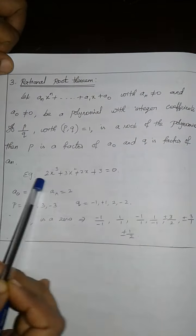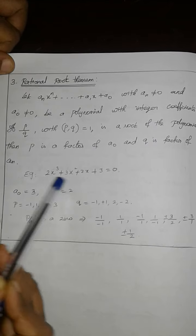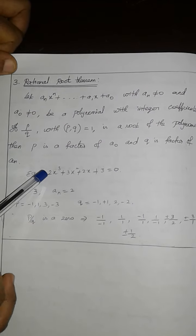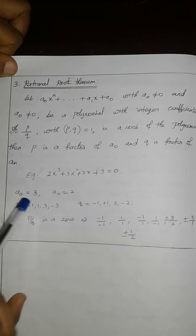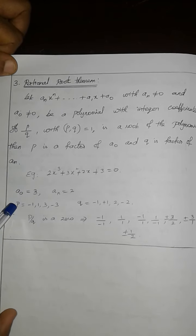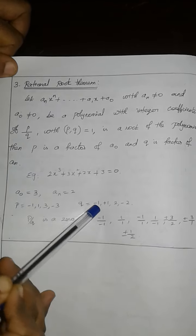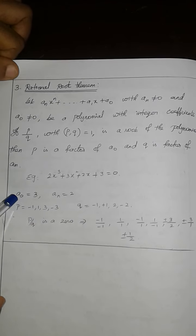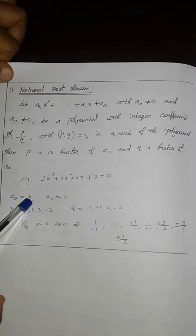a0 is constant. An is 2. We say p and q. We say q and q. We say p and constant value. If we divide this table, plus 1, minus 1, plus 3, minus 3.